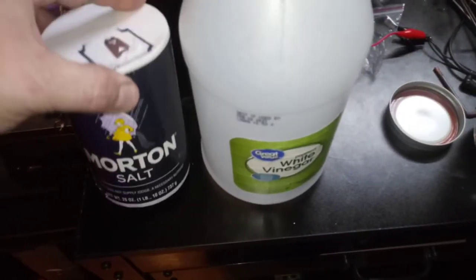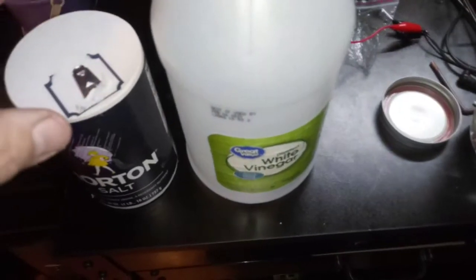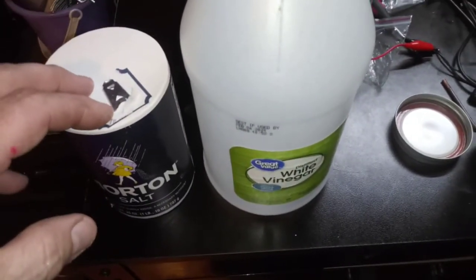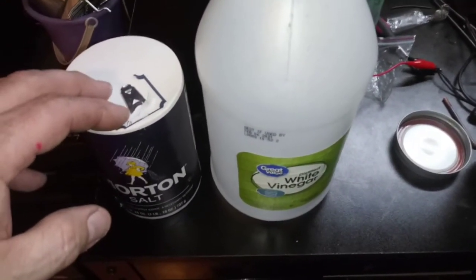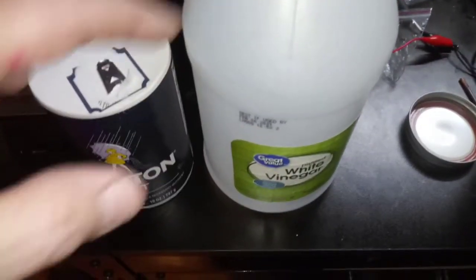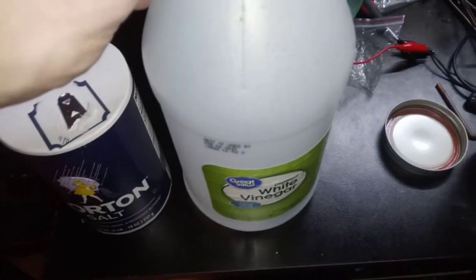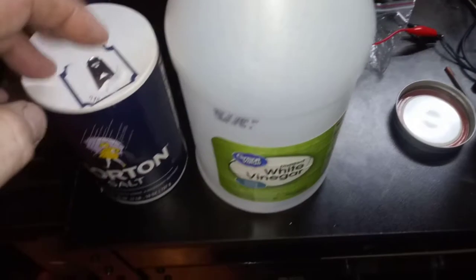These are your main two ingredients when you're doing your electroplating. Be it nickel, copper, zinc, whatever you're doing, this is what you're going to use. Distilled white vinegar and table salt.